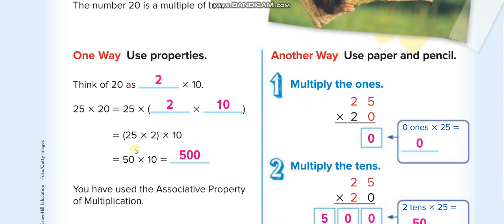The first way they are using here, the property, like they break the 20 into 2 times 10. And then multiply 25, instead of 20, they write 20 as 2 times 10. Then 25 times 2, which is 50, and 50 times 10, 500.